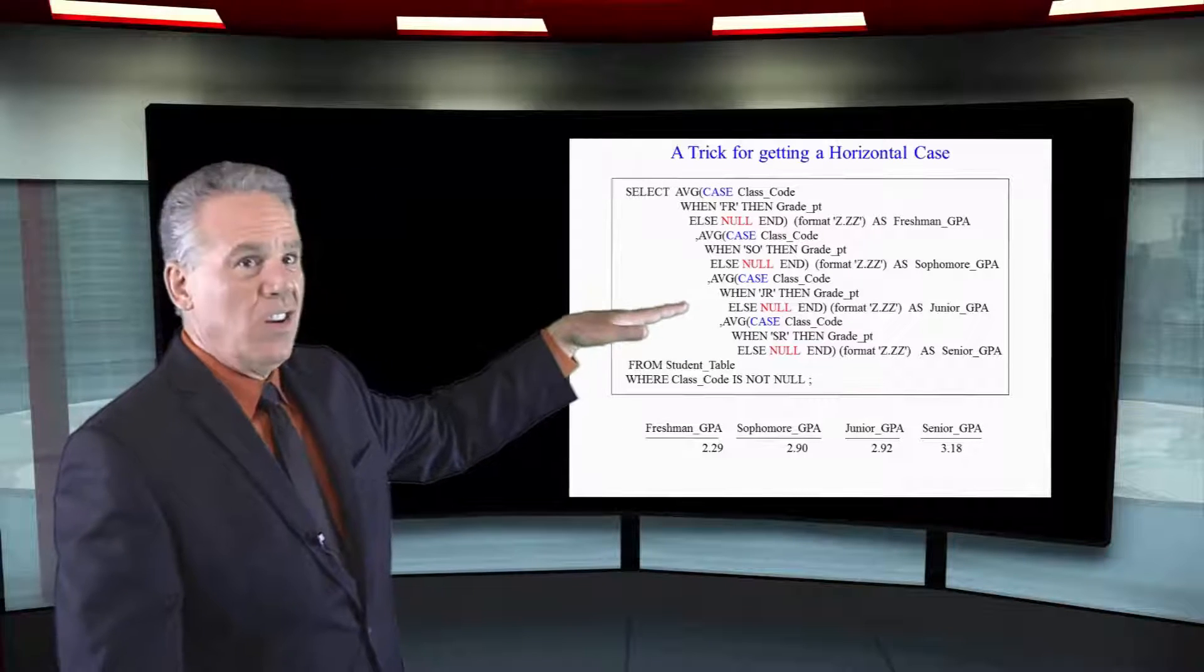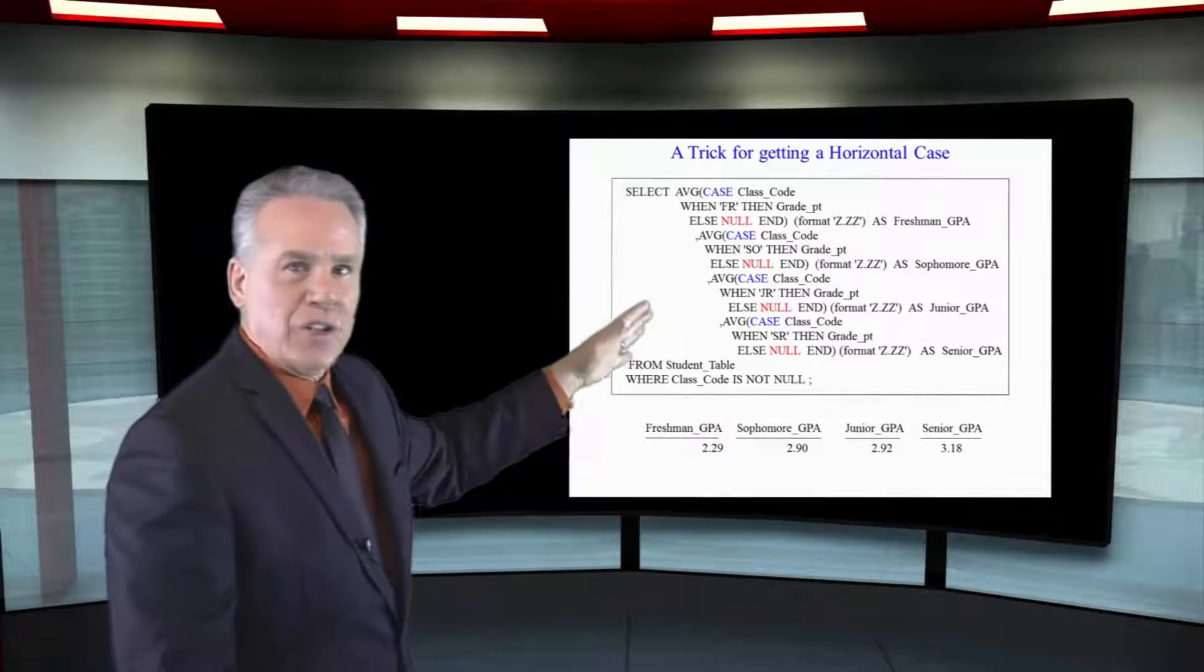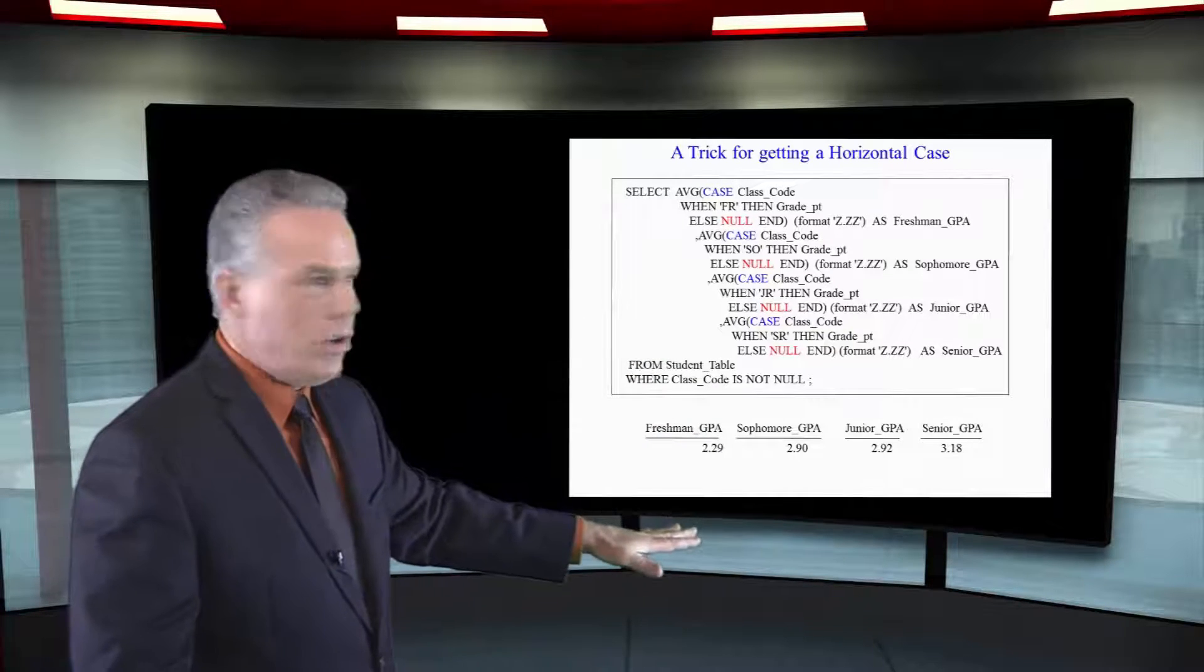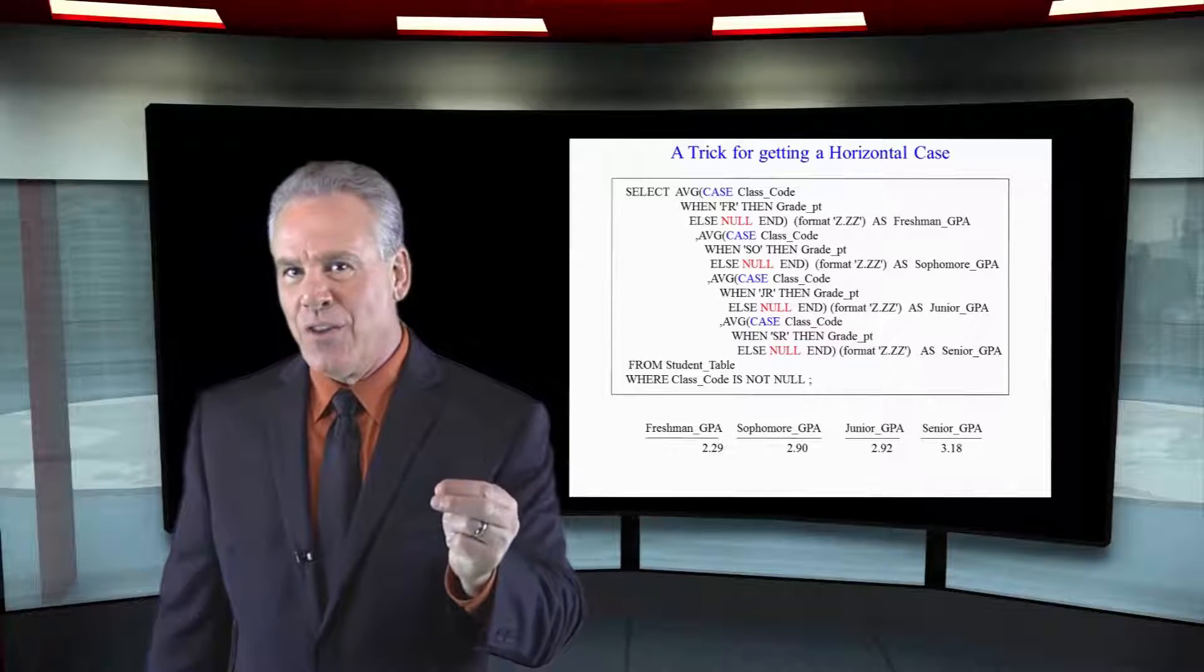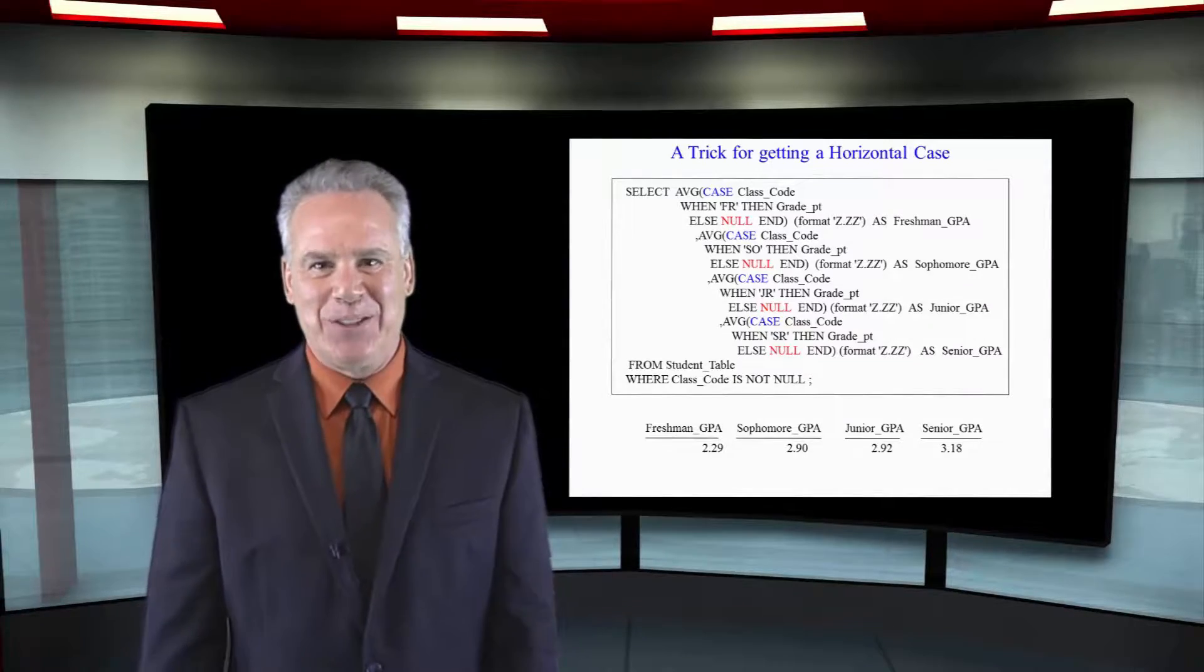Are you a freshman? No. Are you a sophomore? Yes. Average that grade point. Are you a junior? No. Are you a senior? No. Well, then we've got nulls. So this is how you get the horizontal case. Good luck and get that promotion.